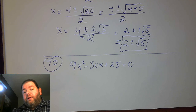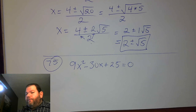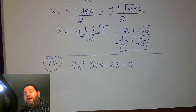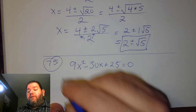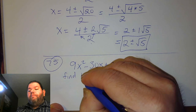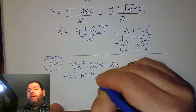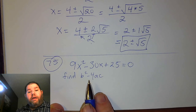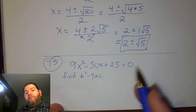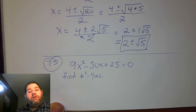In problem 75, we have 9x squared minus 30x plus 25 equal to 0. The instructions are a little different from problem 45. Here they only want us to find the value of the discriminant, which is b squared minus 4ac. Once we calculate that value, we'll interpret the result — what does that tell us about the equation and what kind of solutions we expect?